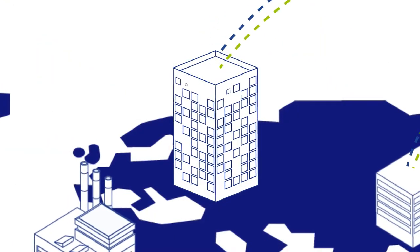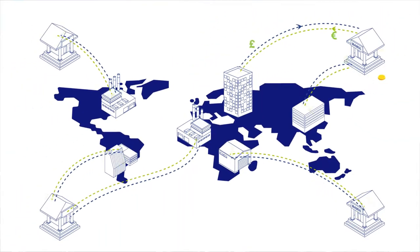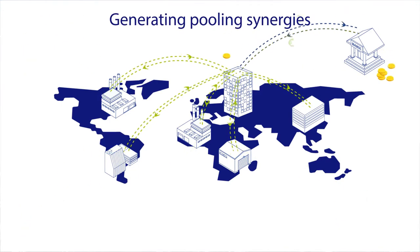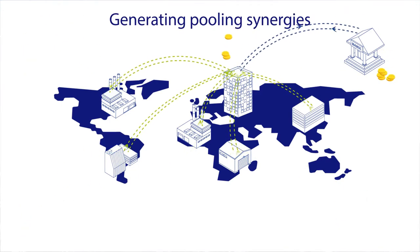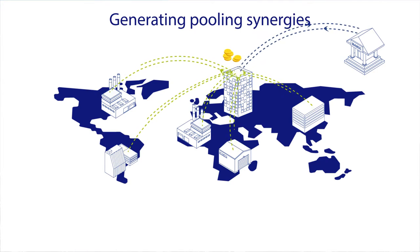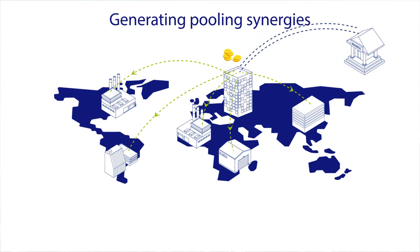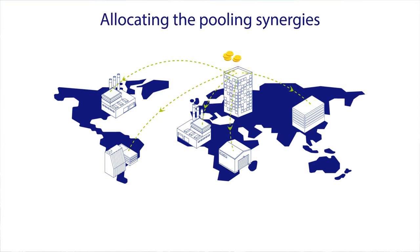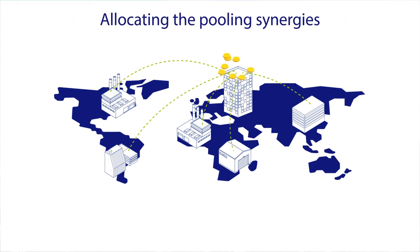As groups expand their global footprint, current accounts are often grouped in cash pools or in-house banks. This allows multinational companies to increase visibility of their cash and reduce banking fees. Transfer pricing regulation requires companies to calculate these synergies and distribute them amongst the group.